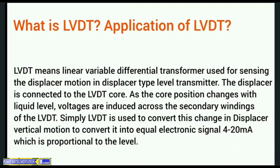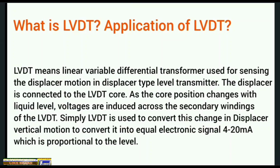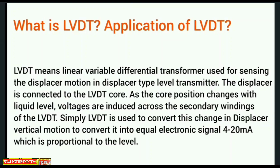What is LVDT and its application? LVDT means Linear Variable Differential Transformer, used for sensing the displacer motion in a displacer-type level transmitter. The displacer is connected to the LVDT core; as the core position changes with liquid level, voltage is induced across the secondary windings of the LVDT. LVDT converts changes in displacer vertical motion into an electronic signal of 4 to 20 mA, proportional to the level.